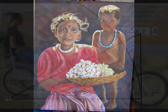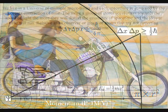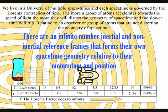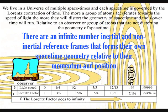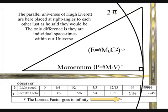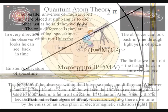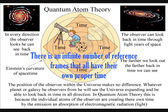In this theory there is no universal time, because the universe is made up of an infinite number of reference frames, that have their own proper time relative to their momentum and position. Therefore we are all in a unique position at the centre of our own reference frame and can look back in time in all directions at the beauty of the stars.